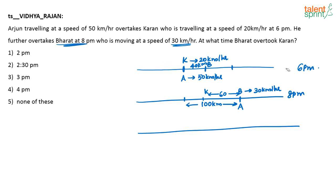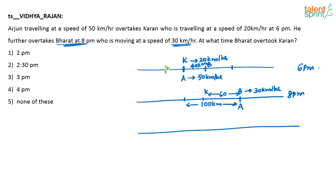At 4 p.m., Bharat would be at a certain point, and Karan — in those 2 hours — would have travelled 40 km total. So the distance between Bharat and Karan now is 20 km. The pattern is clear: at 8 p.m. distance is 60 km, at 6 p.m. it is 40 km, and at 4 p.m. it is 20 km.